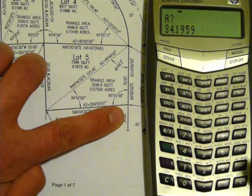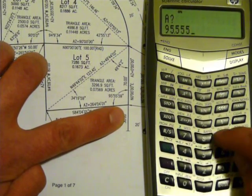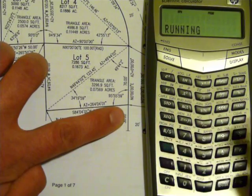The next angle: 95, 55, 59, press RS. It'll solve the triangle.